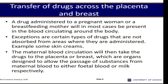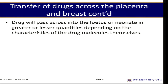A drug administered to the pregnant woman or a breastfeeding mother will in most cases be present in the blood circulating around the body. Exceptions are certain types of drugs that are not absorbed from areas where they are administered — for example, some skin creams. The maternal blood circulation will take the drugs to the placenta or to the breast, which are organs designed to allow the passage of substances from maternal blood to either fetal blood or milk respectively.